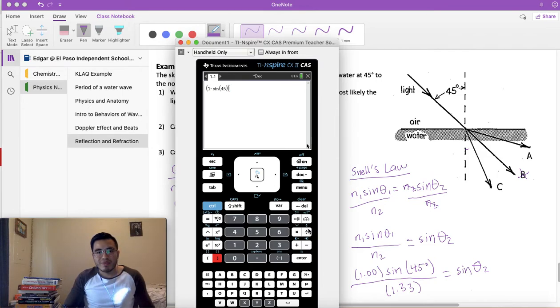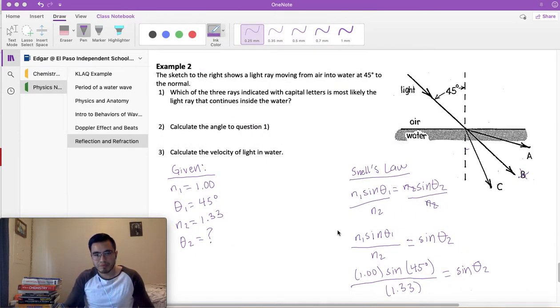And we're going to divide this whole thing by 1.33. Press enter. We have 0.531. Okay, don't forget that, 0.531. So let me write it over here: sin(θ2) is equal to 0.531.